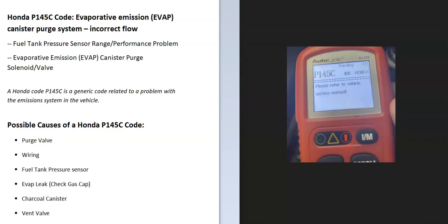Today I'll talk about a Honda with the P145C code — what it is and how you go about fixing it. The P145C code definition can vary depending on which scan tool you're using, but basically there's a problem going on inside the EVAP system. The EVAP system takes all the gas vapors from the gas tank and sends them back into the engine to get burned off so they don't escape into the atmosphere. This is for emissions, and the onboard computer is seeing a problem with this.